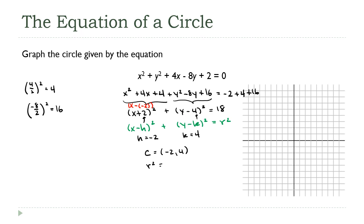r squared is equal to 18, which means r is the square root of 18, which is 3 times the square root of 2. Square root of 2 is about 1.4. So 3 times that is about 4.2, or a fraction more than 4.